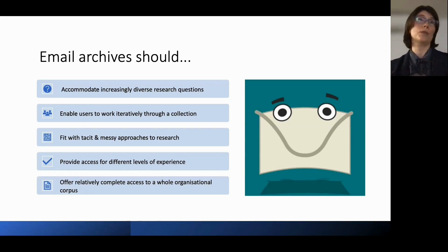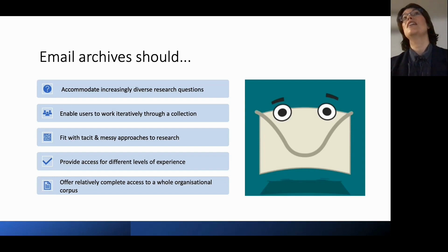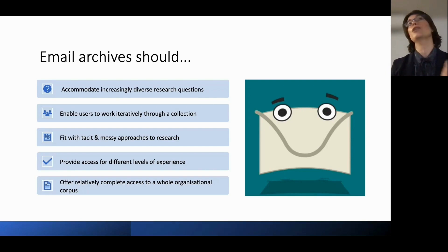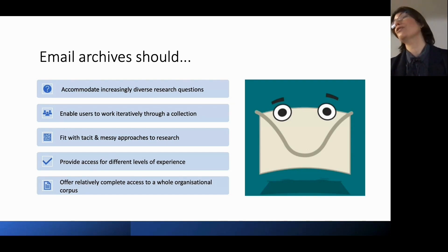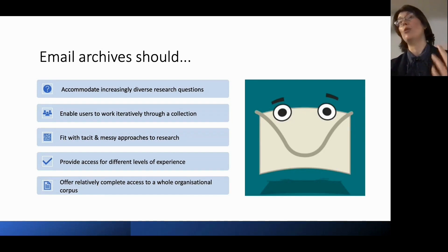Our aim is to accommodate diverse research questions. We obviously come to resources with specific questions and assumptions, but the second part of the project is to find out what questions other people are asking. The goal is to allow users to go iteratively through a collection — to replicate the research experience you might have in a physical archive, allowing quite a tacit and messy approach to research, getting to know the material and becoming more shrewd at what you're trying to find. It also aims to provide access for different levels of experience and offer relatively complete access to a whole organizational email database.